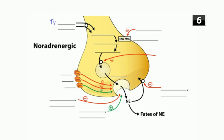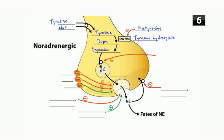Now let's apply that to the noradrenergic nerve terminal — number six in your study guide — where norepinephrine is released. Tyrosine comes into the cell using a sodium co-transporter. Tyrosine hydroxylase converts tyrosine to dopa. A drug called metyrosine can inhibit this step. Dopa decarboxylase then converts dopa to dopamine.